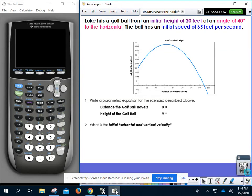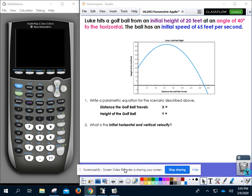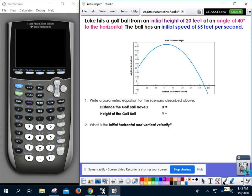Now what I would like you to do is take out the application of parametric equations worksheet. This is the TopGolf example, and it reads that Luke hits a golf ball from an initial height of 20 feet at an angle of 40 degrees to the horizontal. The ball has an initial speed of 65 feet per second. So this is the example that we are going to use throughout this entire worksheet. I really like this worksheet because it does a great job of asking a lot of questions